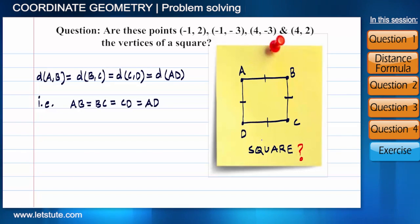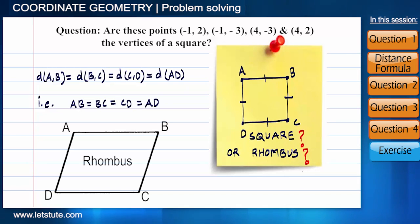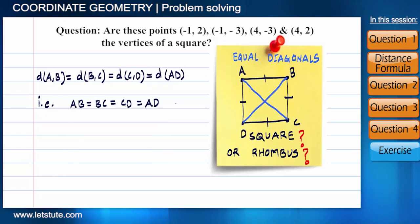Even if all four distances are equal, we cannot say that it's a square because it may be a rhombus as well. Now what to do? Another property of a square is that its diagonals are also equal. Therefore, with all four sides, we'll also have to find whether diagonals AC and BD are equal or not. Now this will be the proper solution.